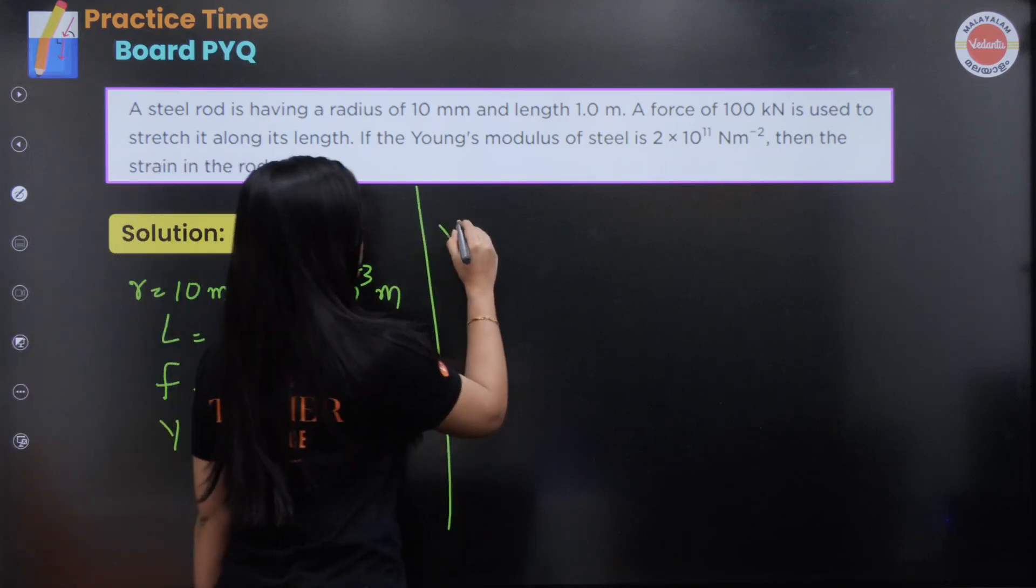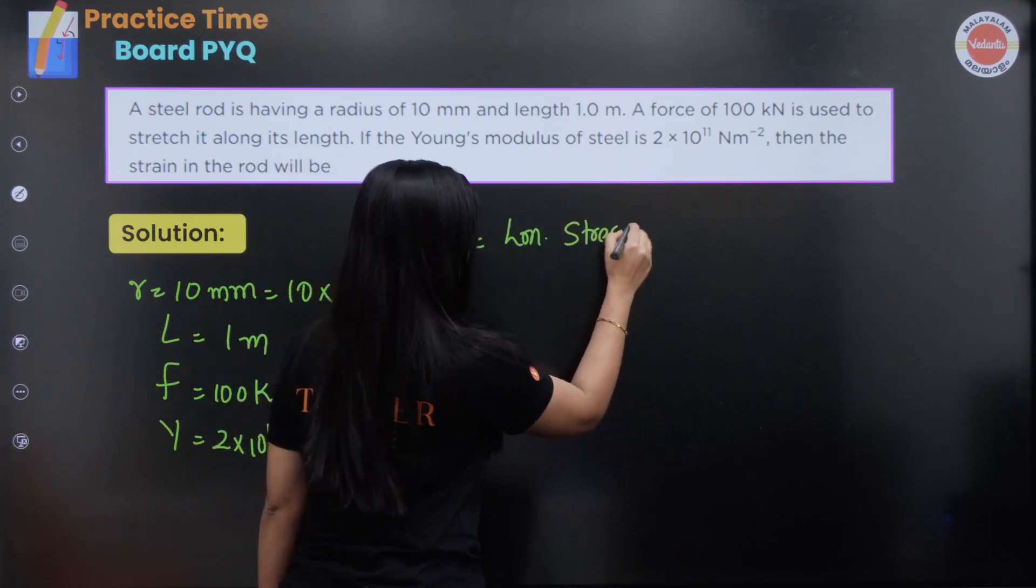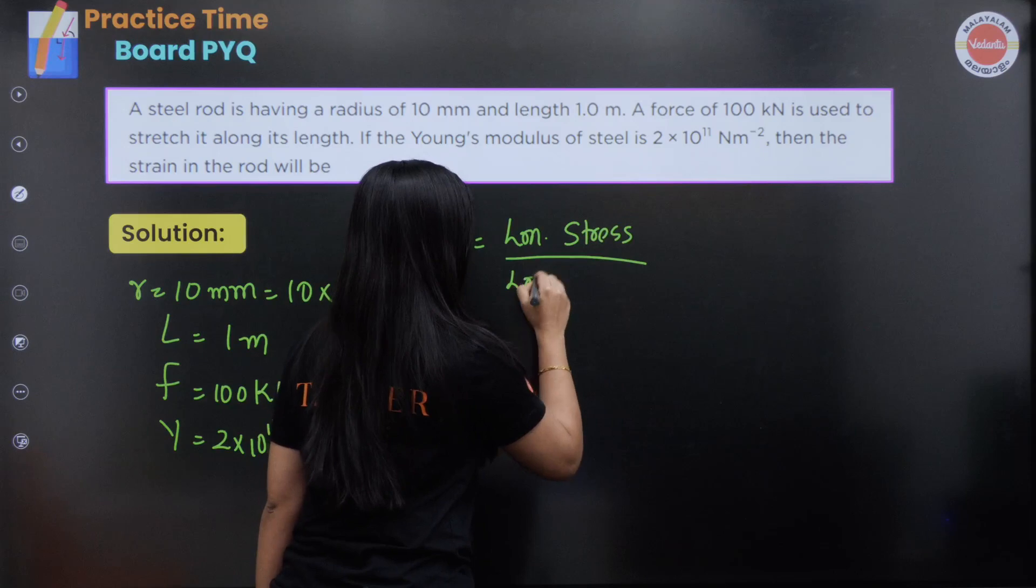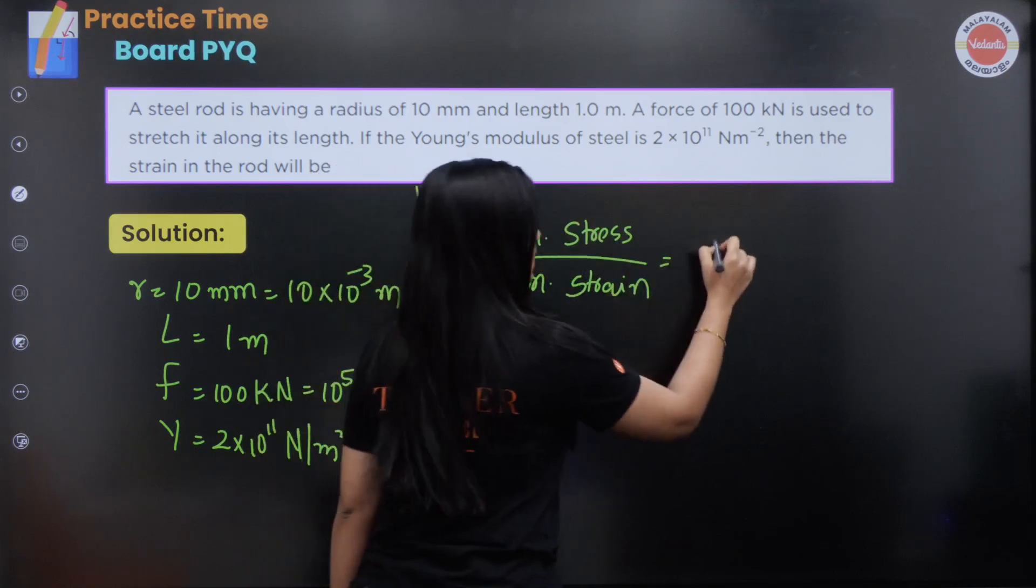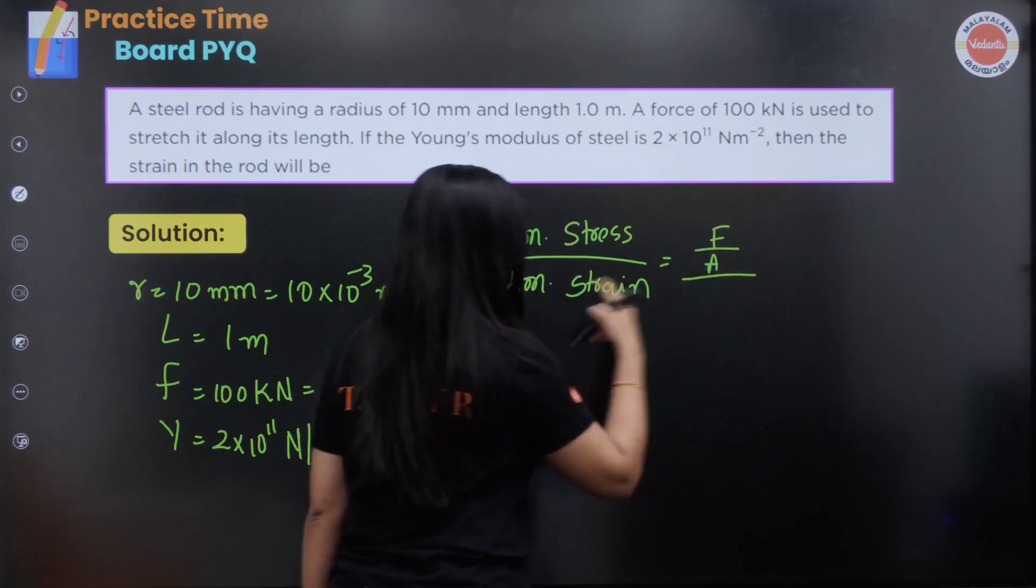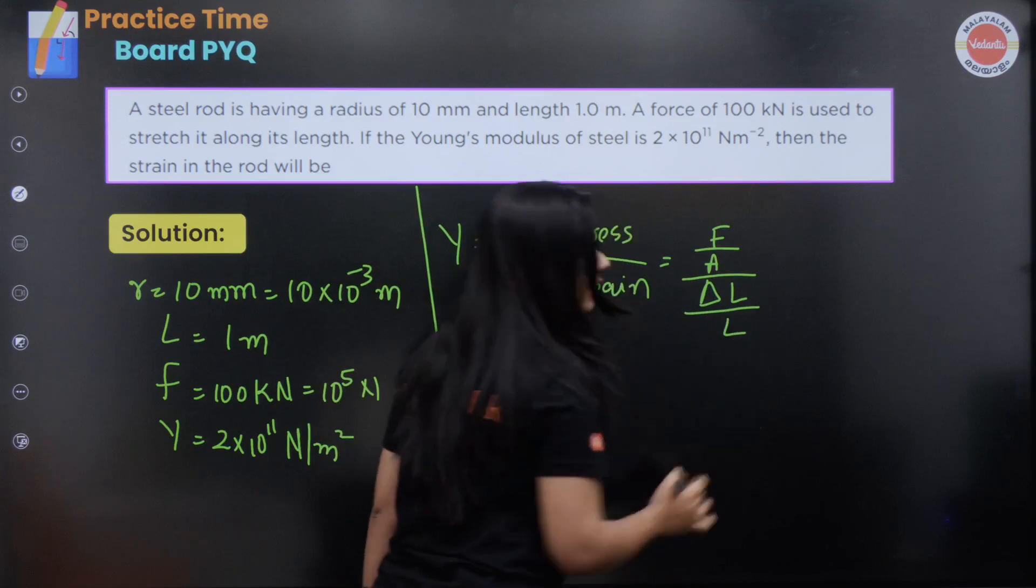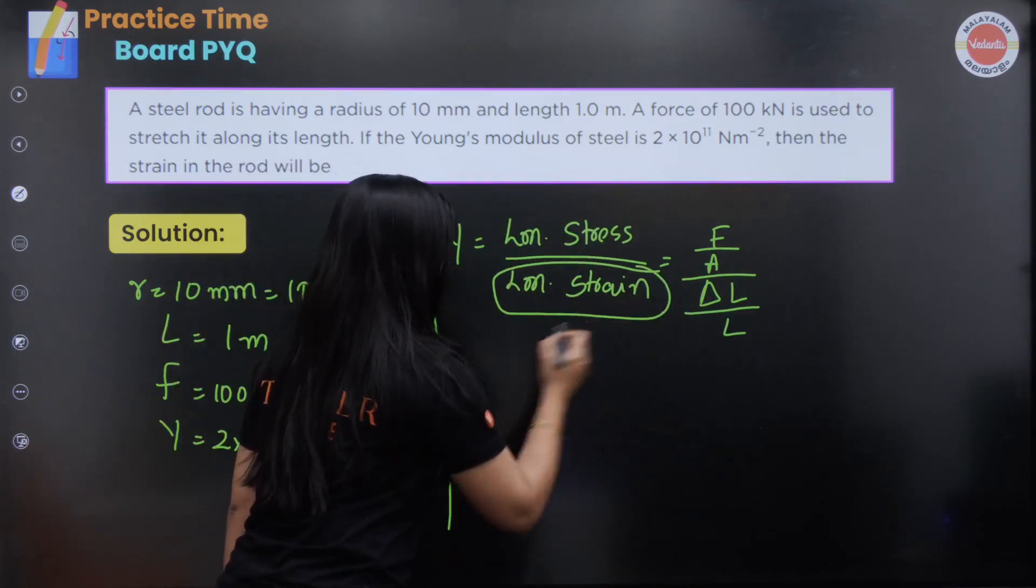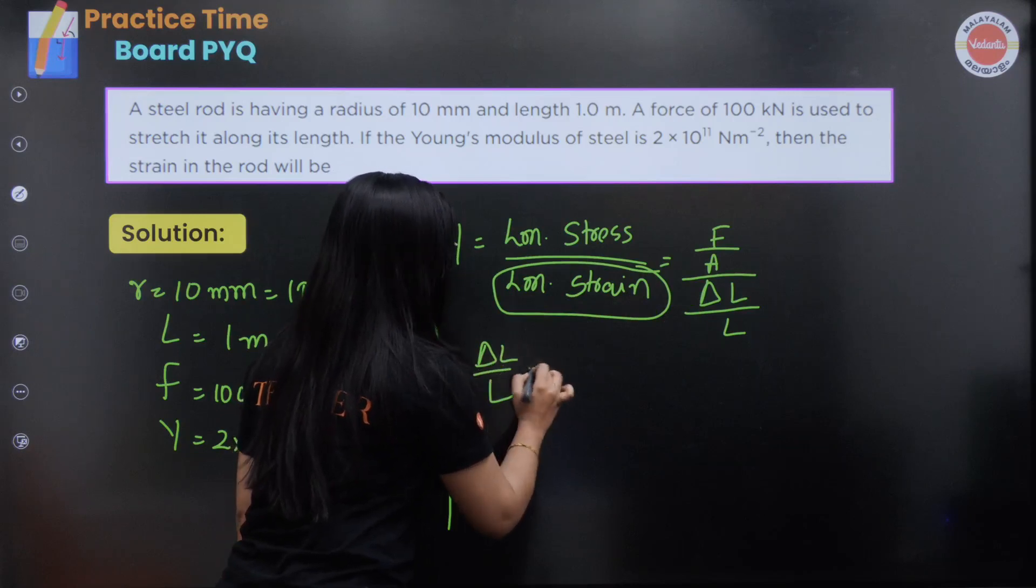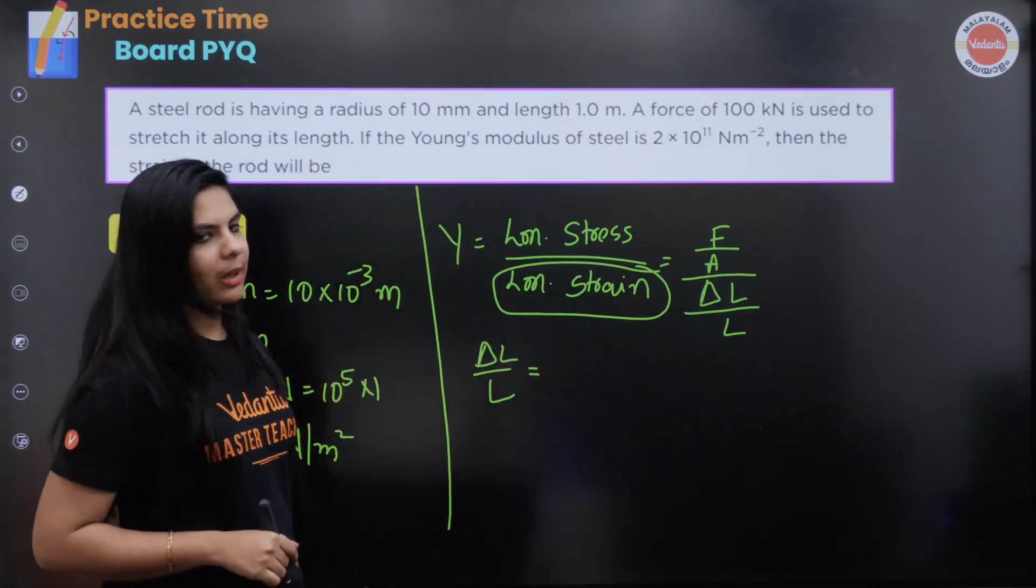Young's modulus is equal to longitudinal stress divided by longitudinal strain. Strain is the change in dimension divided by the original dimension, delta L divided by L.